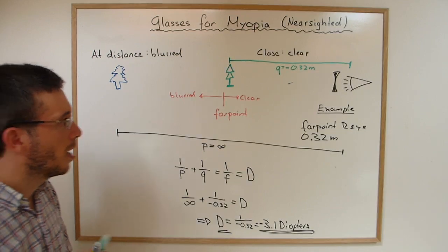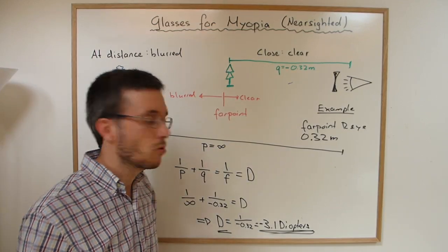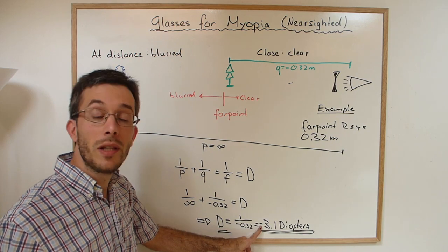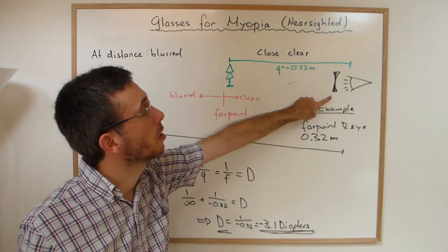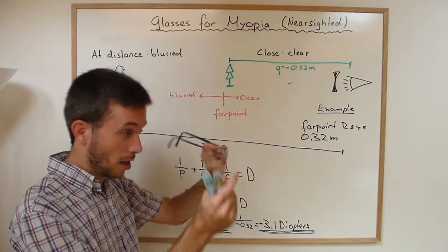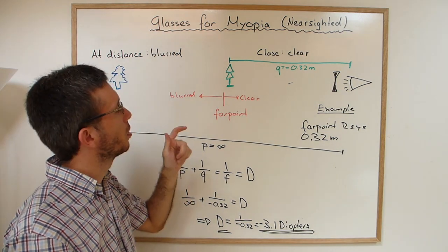So I need glasses for my right eye of minus 3.1 diopters. What does the negative mean? The negative means there are diverging lenses. So my lens here is actually a diverging lens.